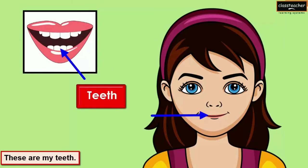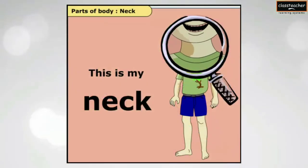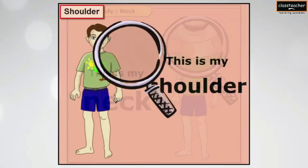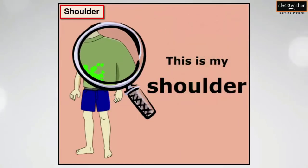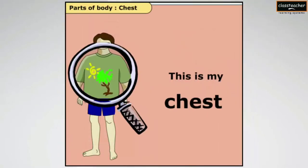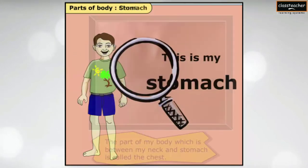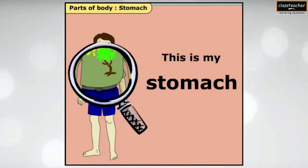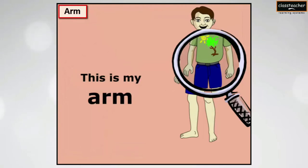Teeth. These are my teeth. Neck. This is my neck. Shoulder. This is my shoulder. Chest. This is my chest. Stomach. This is my stomach. Arm. This is my arm.